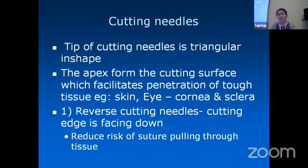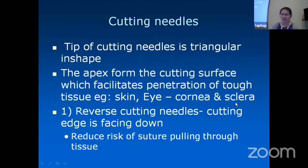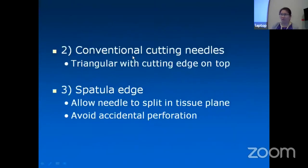For cutting needles, the tip is triangular, and the apex forms the cutting surface, which facilitates penetration of tough tissue. If you use tapered needles on tough tissue, it will be difficult to penetrate. Cutting-edge needles help penetrate tissues such as the cornea and sclera. Reverse cutting needles have the cutting edge facing downwards, which reduces the risk of the suture pulling through the tissue — the cheese-wiring effect. The spatulated edge allows the needle to split within the tissue plane and avoid accidental perforation.